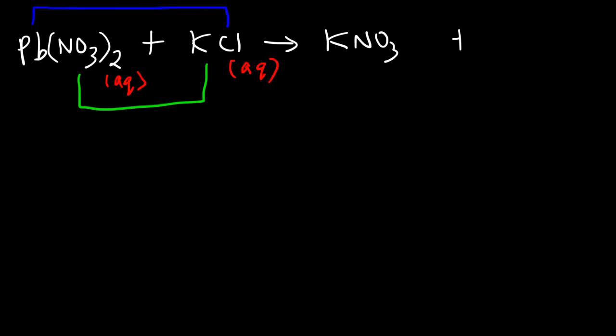Now the other product we need to pair up lead and chloride. Lead has a positive two charge and we could tell based on how many nitrate ions are attached to it. Each nitrate ion has a minus one charge and there's two of them. So to neutralize the two nitrate ions lead has to have a positive two charge. Chloride has a minus one charge so when you combine these two it's going to be lead one Cl2 or basically just PbCl2.